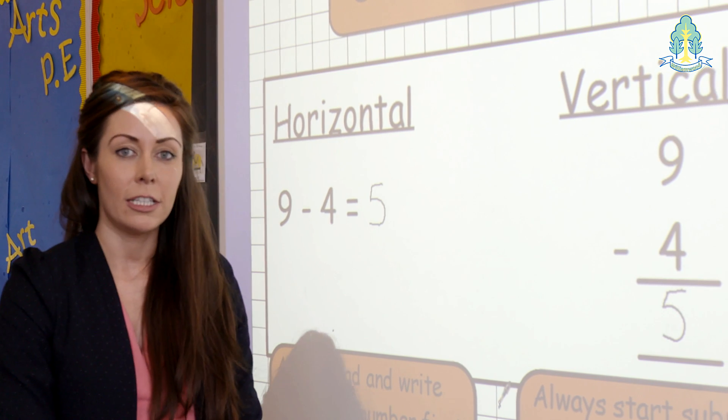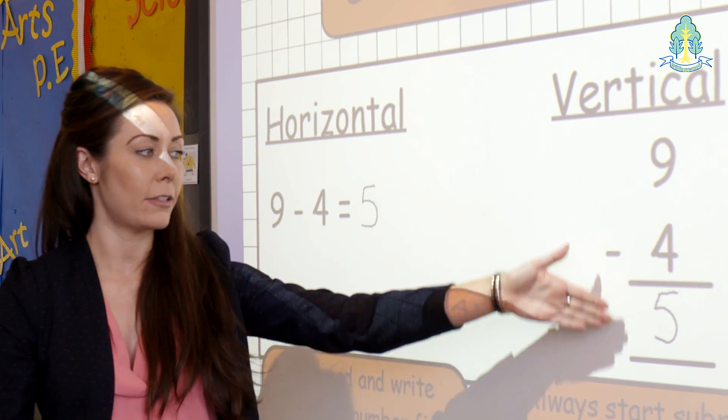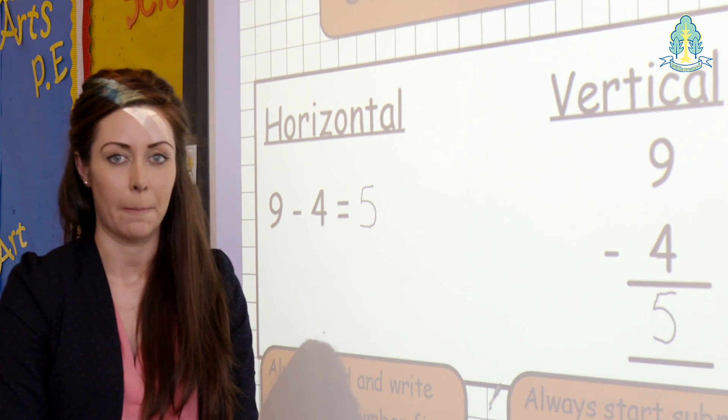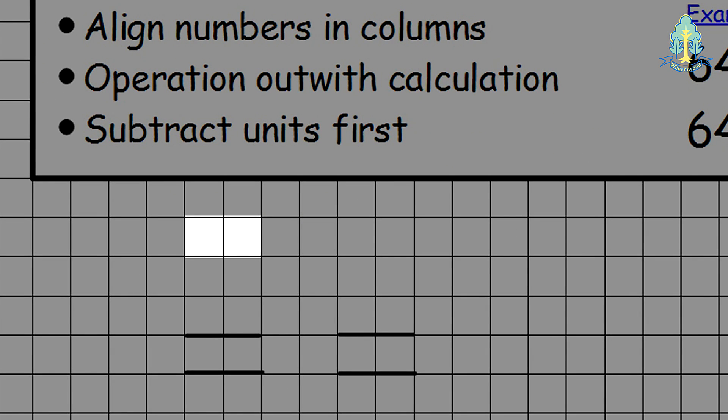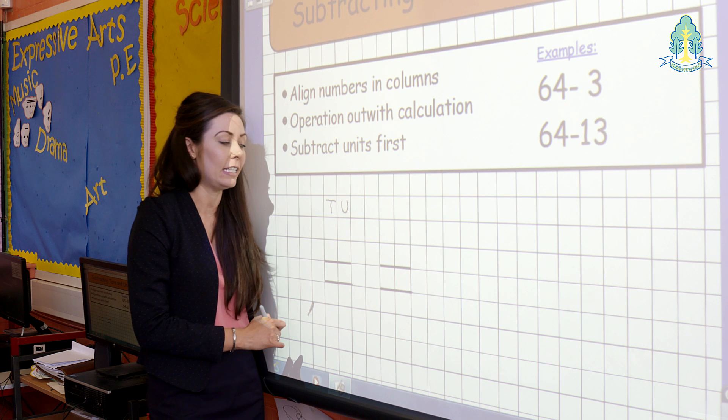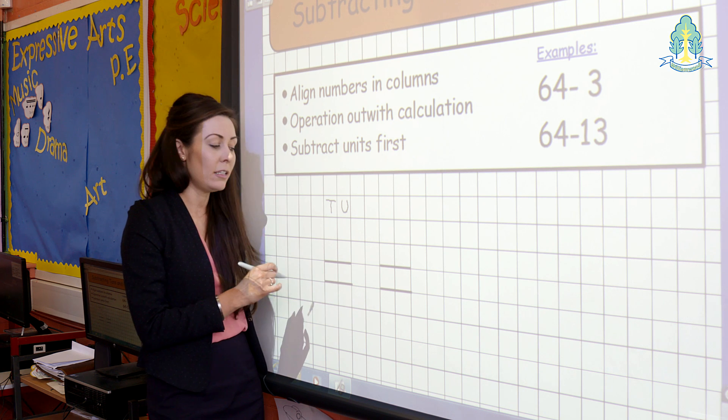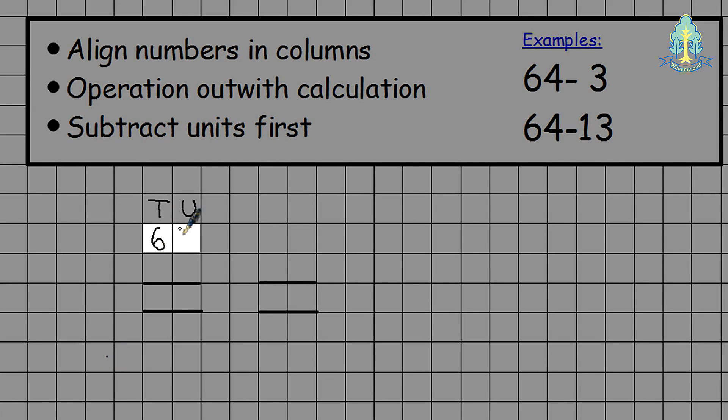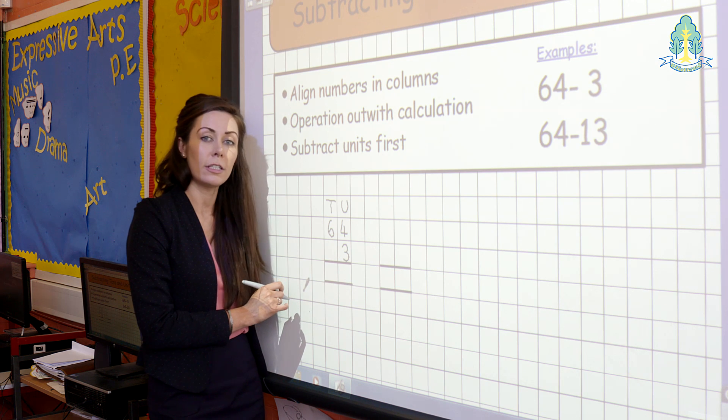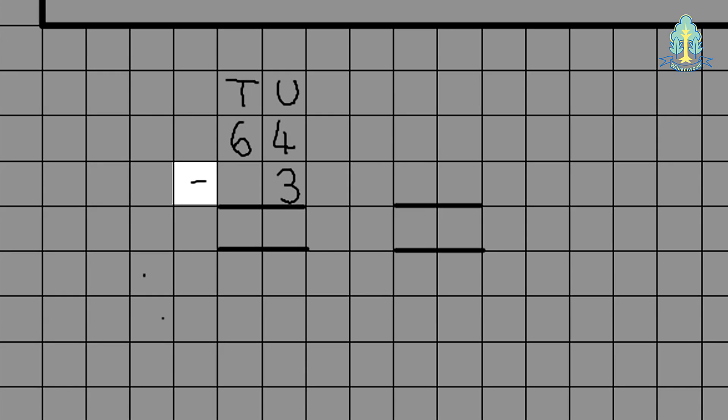This helps children learn that they should progress down a subtraction calculation. When subtracting tens and units we encourage the pupils to use the headings T and U to represent tens and units in each column. They align the numbers with the largest number going first, 64, and as 3 is a unit it will be in the units column. They must also ensure the subtraction sign is outside the calculation so not to be confused in the tens column.